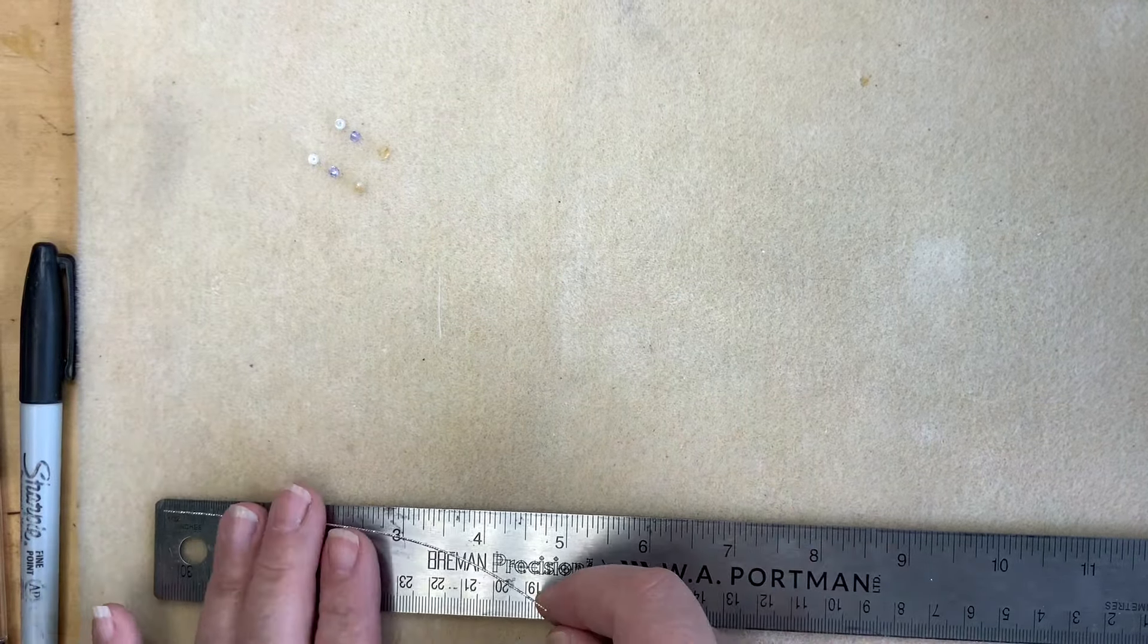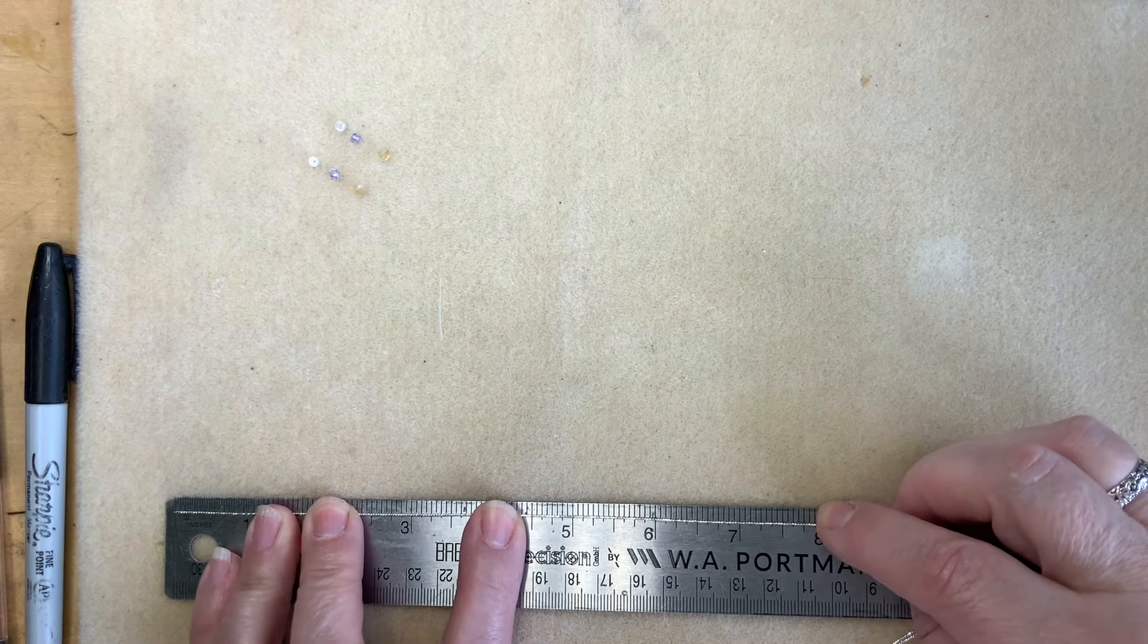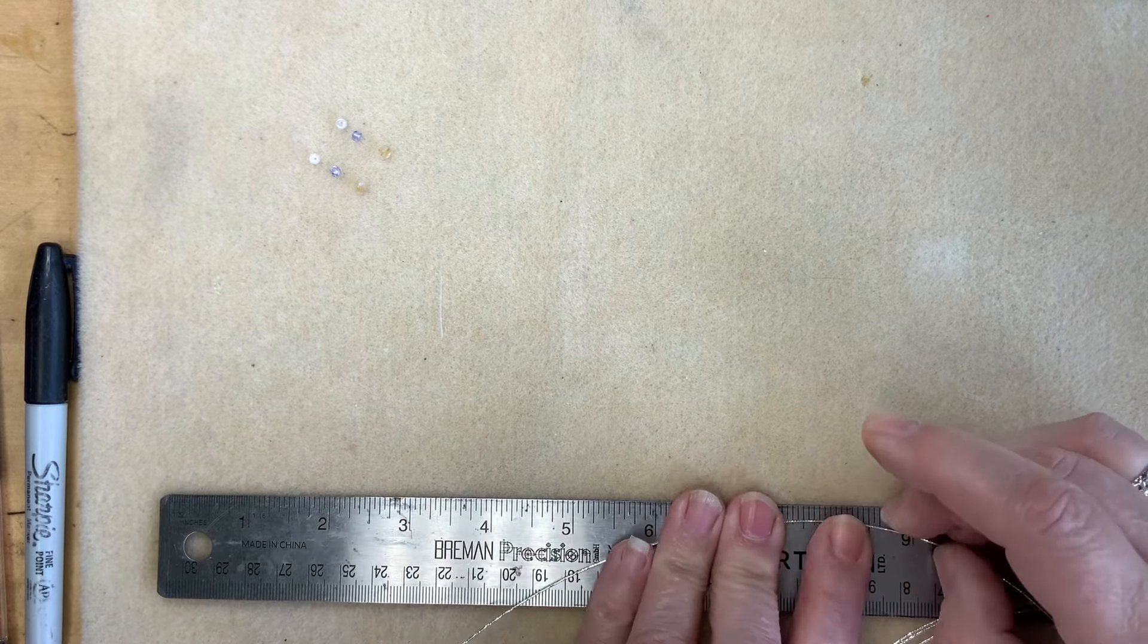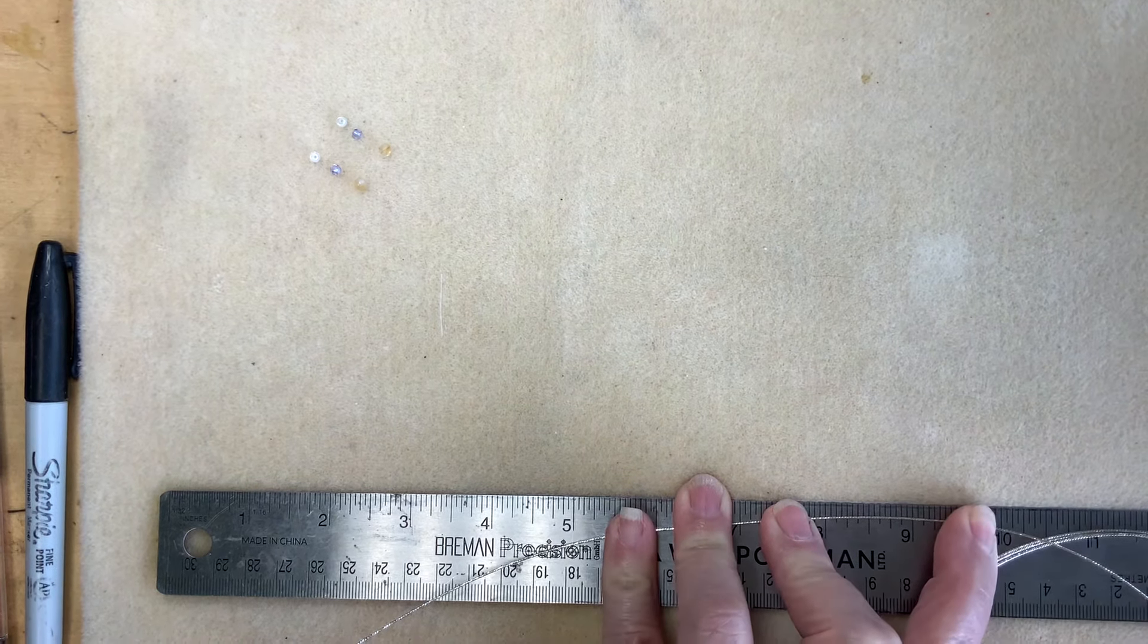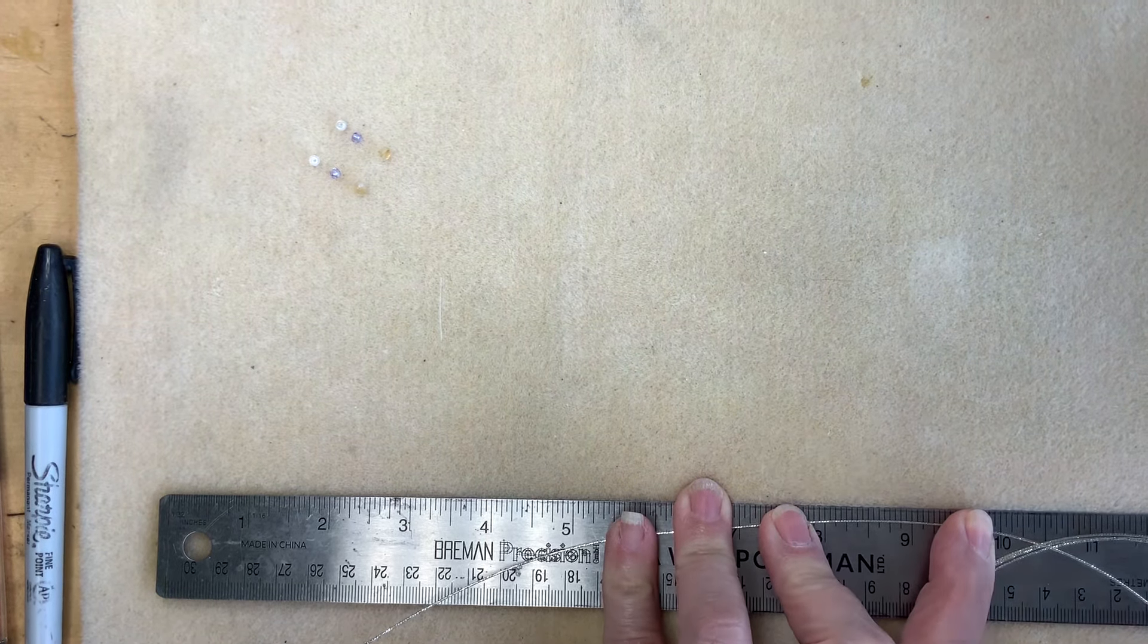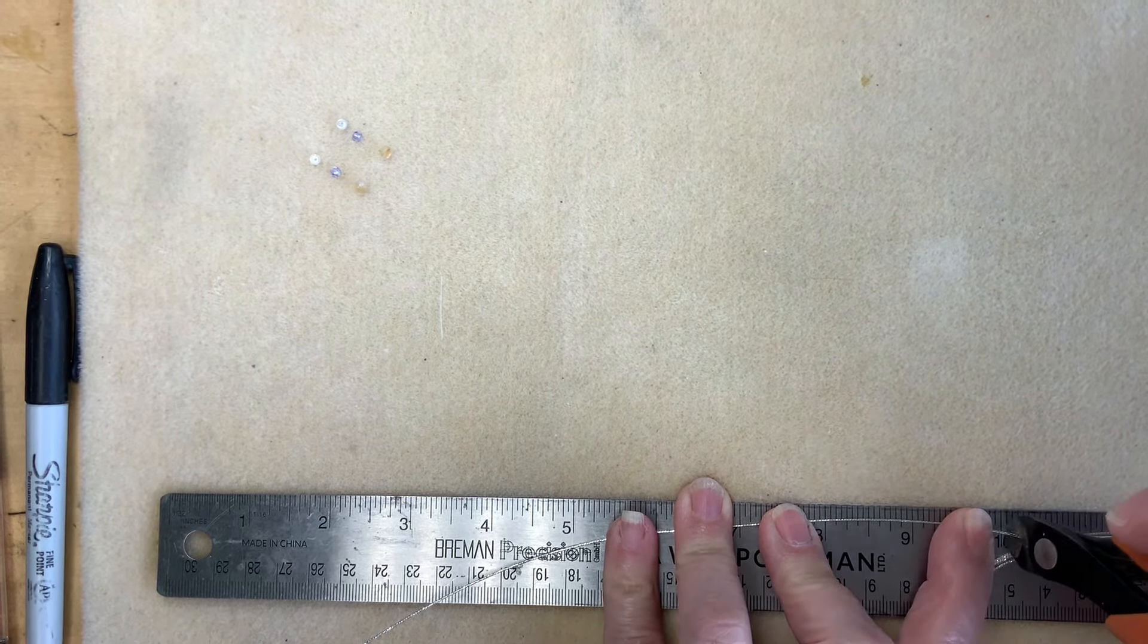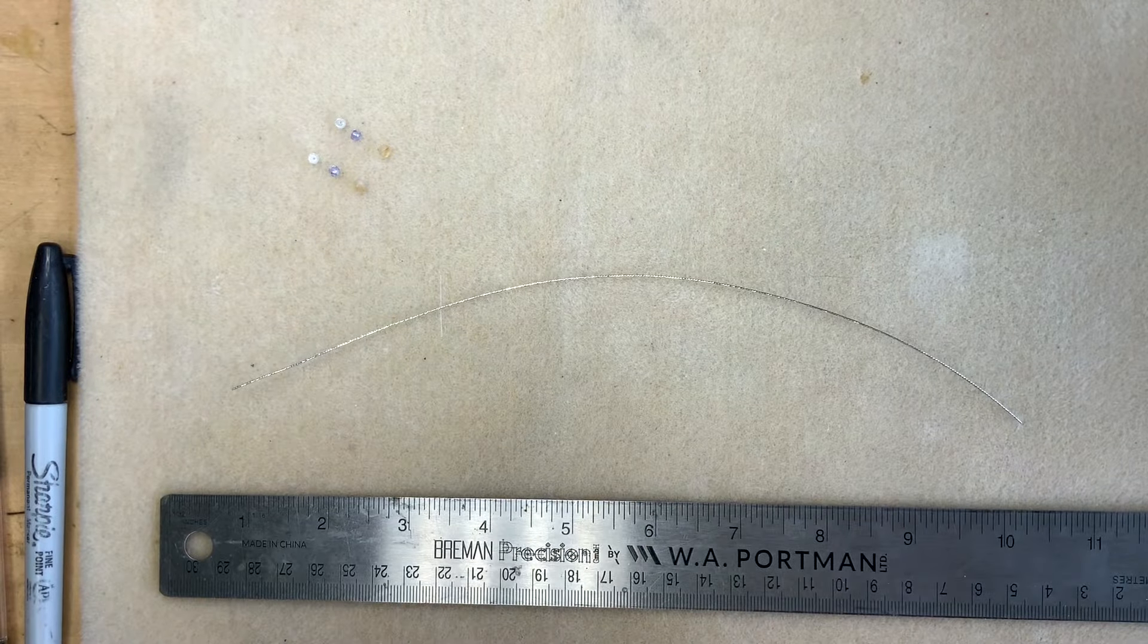I'm going to measure out here a 10 inch piece of wire to make the two and a half inch earrings. This is diamond cut wire that's 20 gauge, which is the common size to make ear wires out of, so it will fit comfortably through someone's ear.